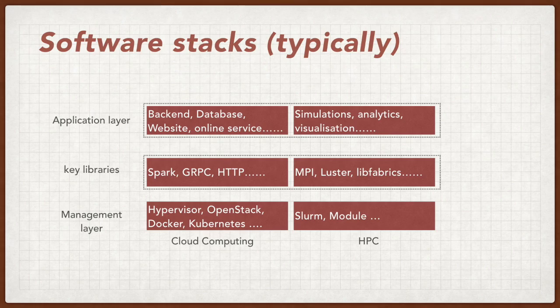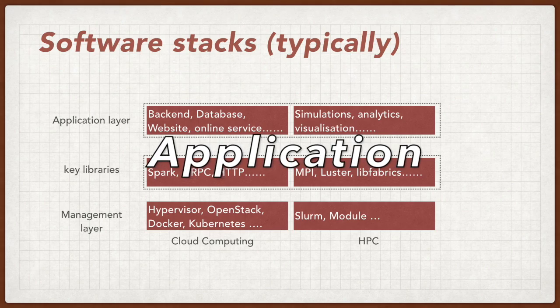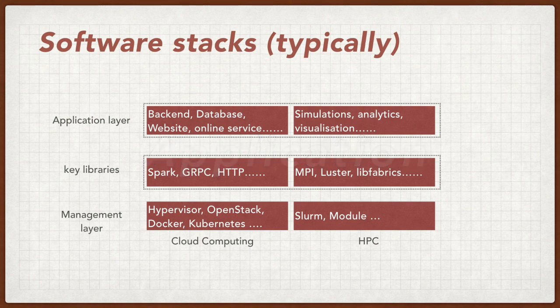For the application layer, there is also no clear boundary. But for cloud computing, backend engines are commonly used to support front-end web pages or online services, and databases are also important. For HPC, the focus is more on simulations, analytics, and visualizations.